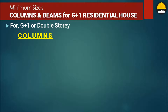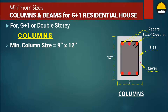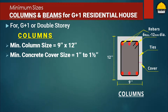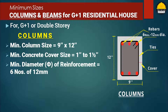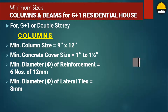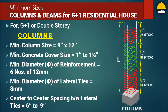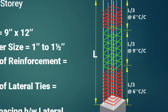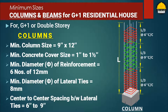If you are willing to construct a house with two storeys — that is a G+1 residential house — then for columns: minimum size of column should be 9 inch by 12 inch or 230 mm by 300 mm, concrete cover to be provided of 1 inch to 1.5 inch or 25 mm to 35 mm, minimum longitudinal reinforcement of at least 6 numbers with diameter of 12 mm as clearly shown in the picture, minimum diameter of lateral ties should be 8 mm, and minimum spacing of 6 inch to 9 inch or 150 mm to 230 mm. The spacing of ties is closely spaced at 6 inch center to center at the top and bottom of the column.